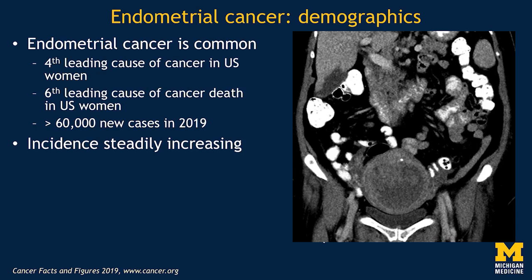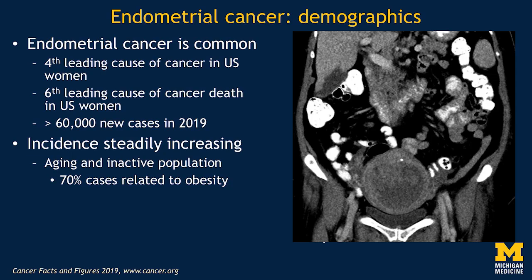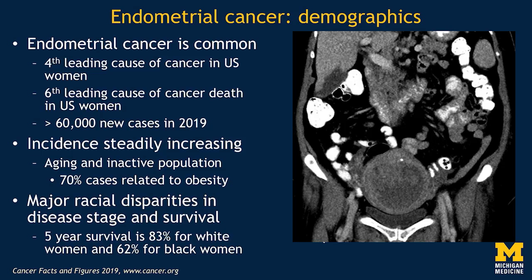There will be more than 60,000 new cases this year. The incidence in this country and in all westernized countries is steadily increasing, because this disease is related to obesity, and our population is increasingly aging and inactive. 70% of cases of endometrial cancer are related to obesity, because obesity increases peripheral production of estrogen through aromatization of testosterone precursors like androstenedione. Estrogens increase the mitotic rate of endometrial cells and are primarily implicated as a risk factor in type 1 cancers. Major racial disparities persist in disease stage and survival — five-year survival is very high for white women and considerably lower for black women. Radiologists can help improve early treatment, diagnosis, and appropriate staging.